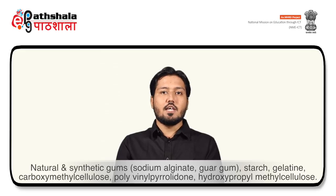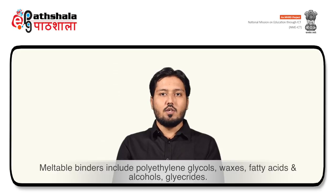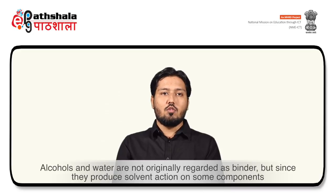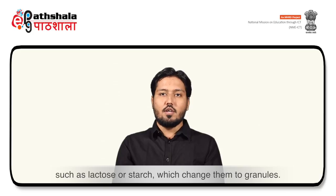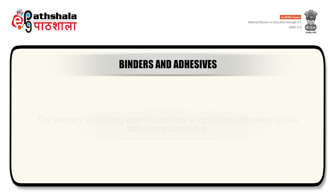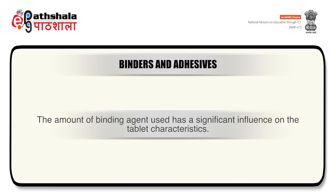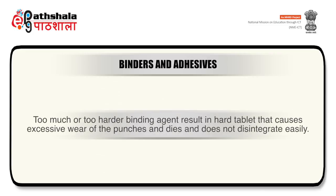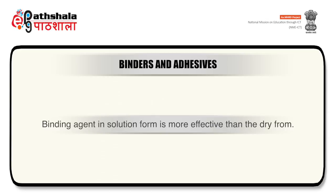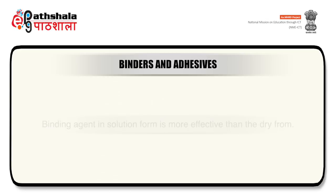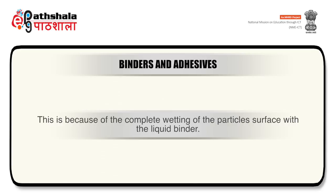Meltable binders include polyethylene glycols, waxes, fatty acids and alcohols, and glycerides. Alcohols and water are not originally regarded as binders, but since they produce a solvent action on some components such as lactose or starch, they change them into granules. Binders can be used either as liquid or in dry form. The amount of binding agent used has a significant influence on tablet characteristics. Too much or too hard a binding agent results in a hard tablet that causes excessive wear of punches and dies and does not disintegrate easily. Binding agent in solution form is more effective than in dry form because of the complete wetting of the particle surface with the liquid binder.